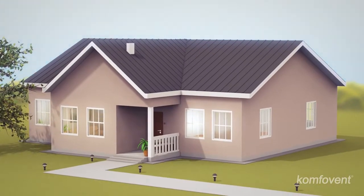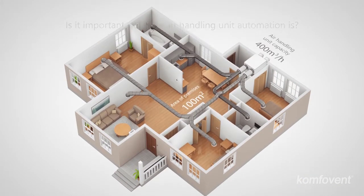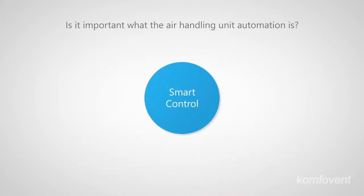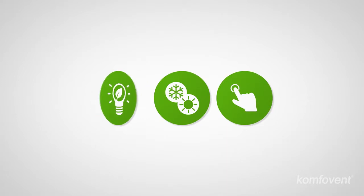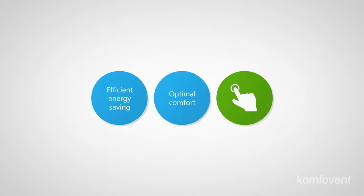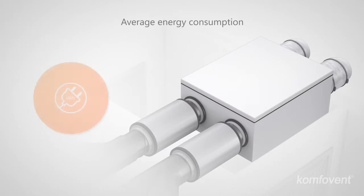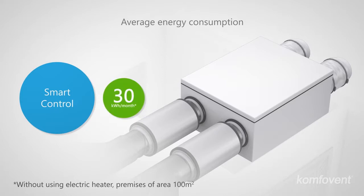The recuperation system in your home ensures the necessary level of fresh air and saves energy. Automation technology has a great impact on system performance. Smart control reduces power costs of air handling units, adjusts ventilation to your everyday needs, and provides a wide range of control options.